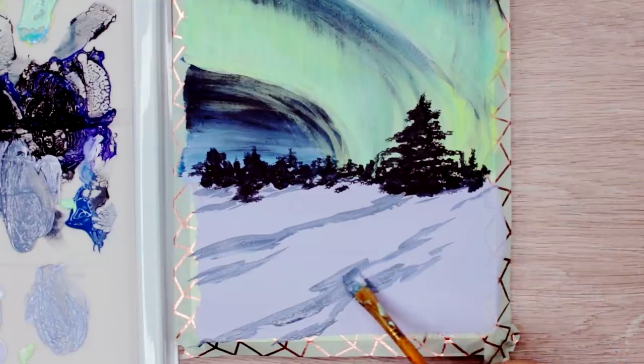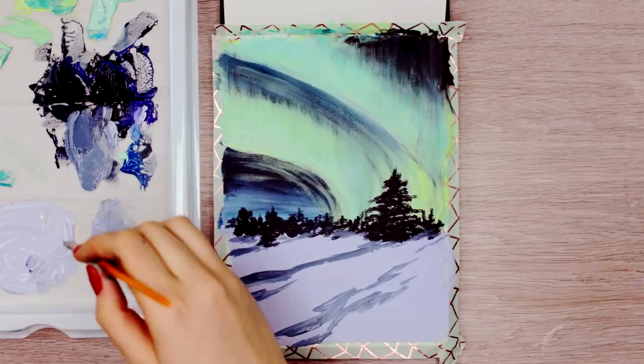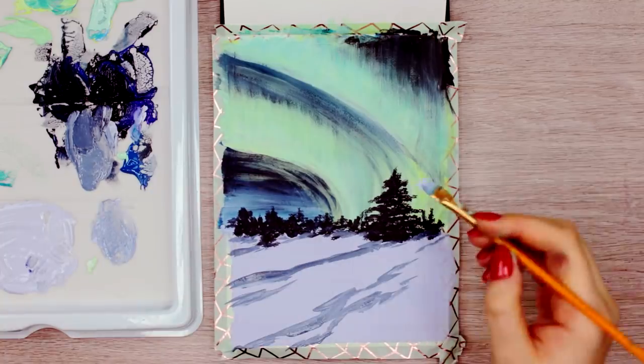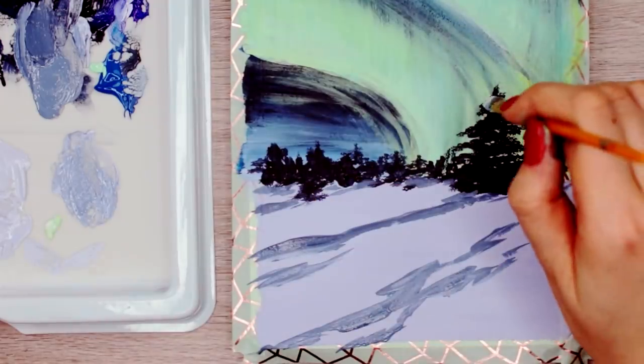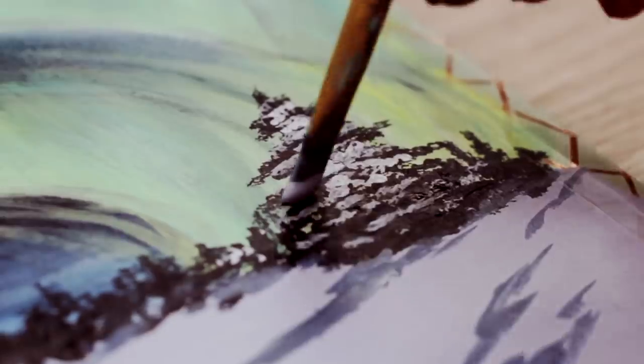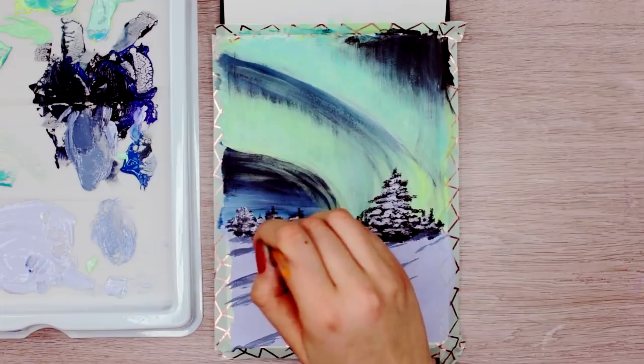Once the trees have dried, we can add some snow on top of them as well. Here, load up your flat brush with the same shade as we used for the snow earlier and dab on the paint the same way as we created the trees. Just here, leave out some of the dark colors in between.